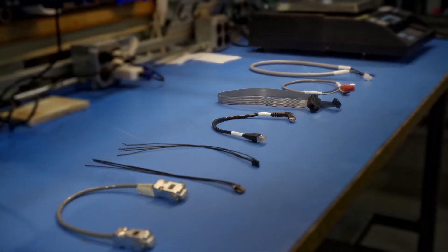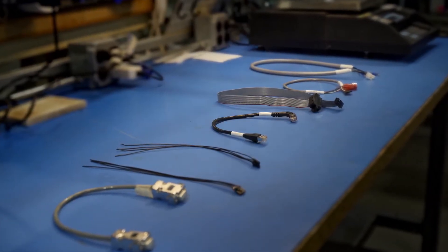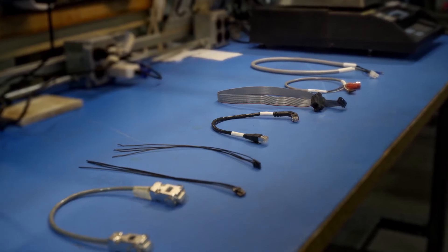Printed circuit boards often need a wire harness or cable assembly for connection to power input or to other parts of the electronic system.